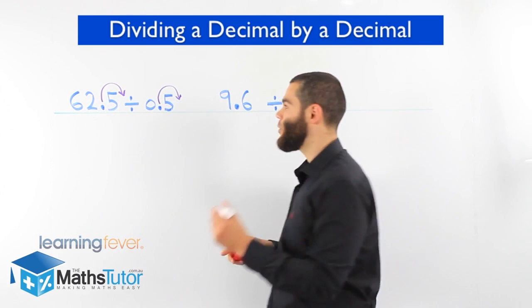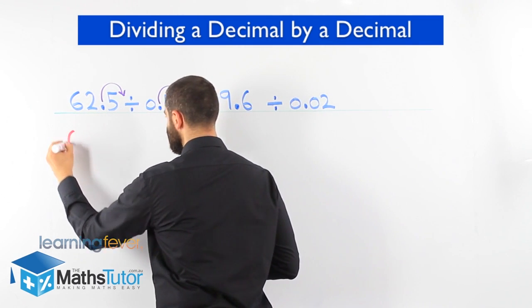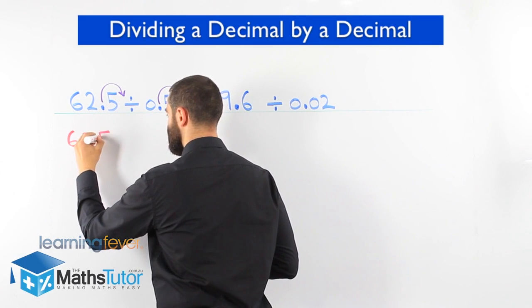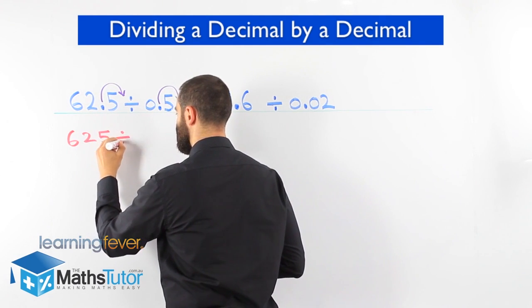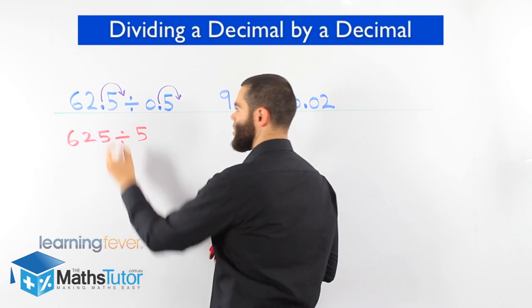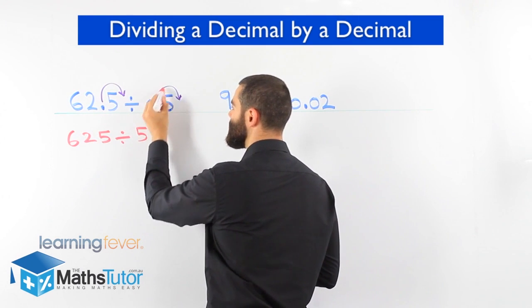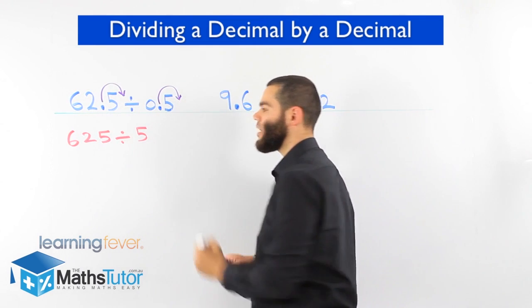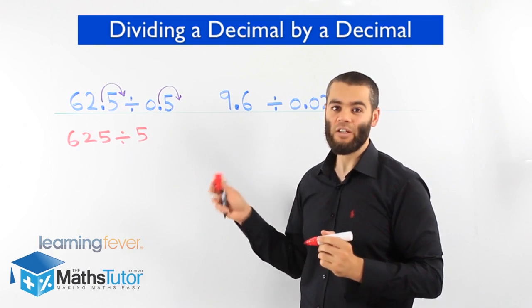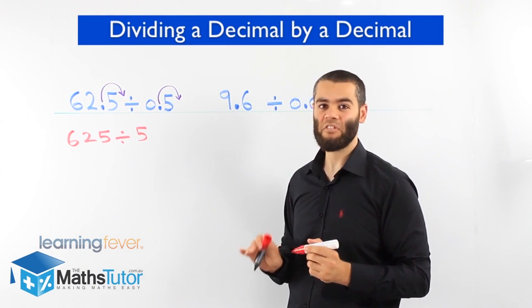Now that we've moved it, let's see what numbers we have. It became 625 and this became 5. Can we now divide these numbers? Yes, we can. And you're going to get exactly the same result.